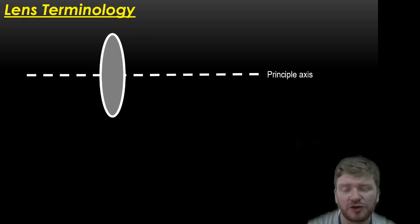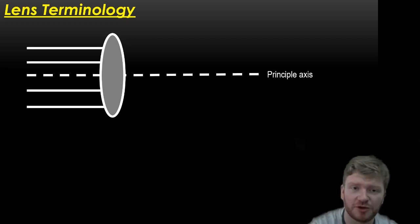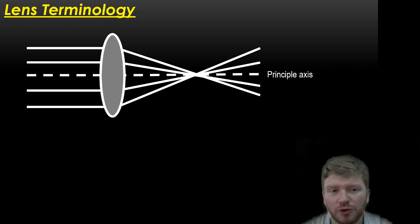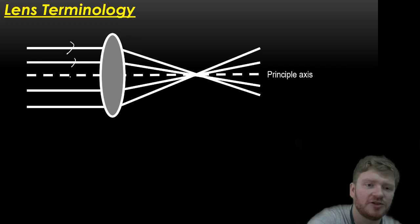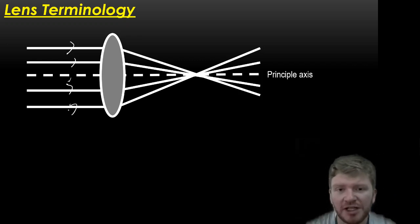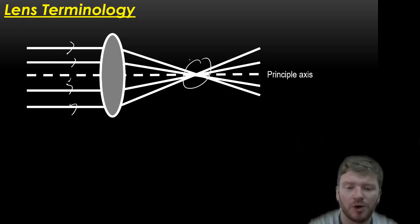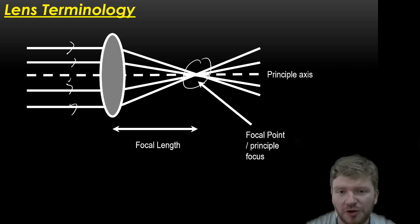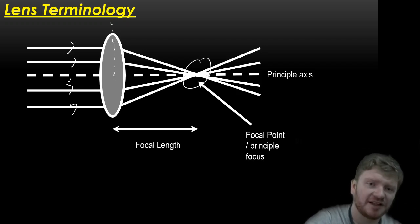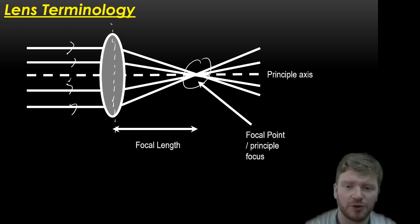And just a couple more bits of lens terminology that we don't actually really need for your IGCSE. Well, we don't need the principal axis, but we do need a couple of others for your IGCSE. Now, what I've drawn here is several different lines. So these are all parallel incident rays entering my lens and leaving. Now, what you see is that all of those points cross at one point together. Now, we call that the principal focus or the focal point of the lens. Another thing that we have, then, is a length. And the length goes from the dead centre of the lens down to the focal point. And we call that the focal length.